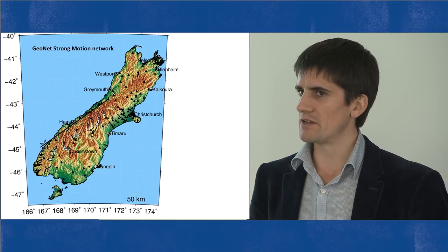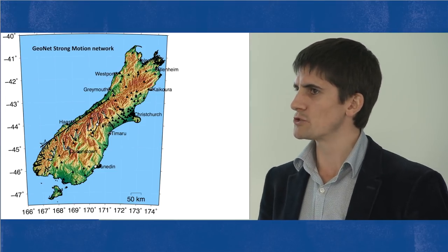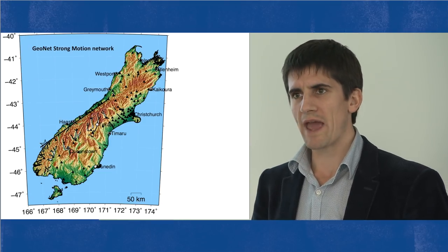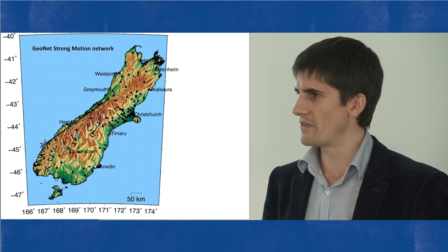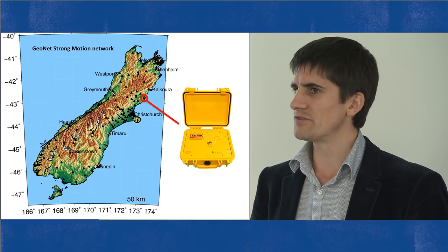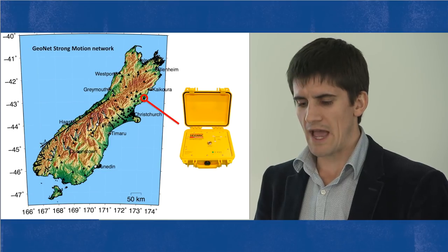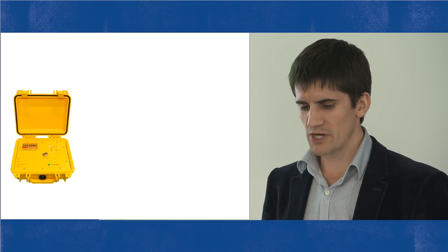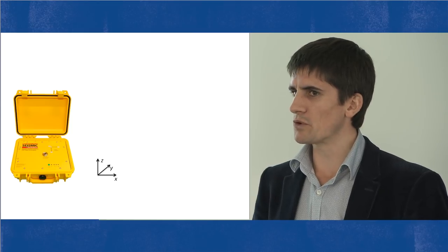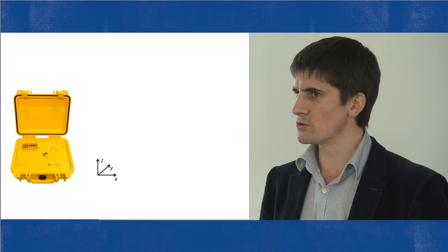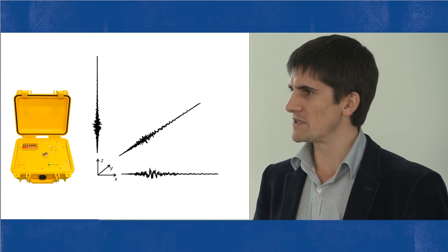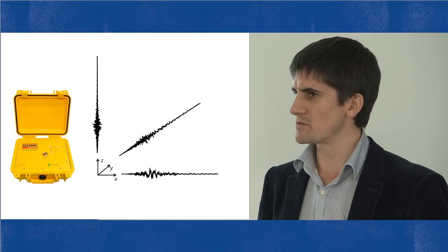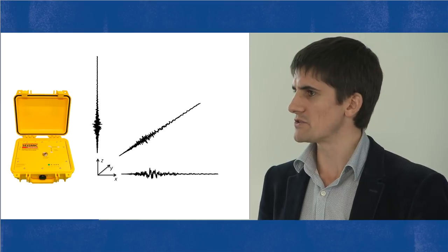Throughout the South Island there have been many earthquakes, from relatively large all the way down to very small, and each of the black points on this slide highlights locations where we have an instrument that can record that complicated pattern of ground shaking. At each of those black triangles we have an instrument that records various properties of the ground shaking — generally the three translational components: the x, y, and z directions.